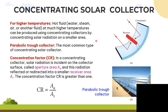Next, we look at concentrating solar collectors. Here you can see an example of a parabolic trough collector, with the concentrator and the receiver shown. For higher temperatures, hot fluid — for example water, steam, air, or another fluid — at much higher temperatures can be produced using concentrating solar collectors by concentrating solar radiation on a smaller area. The parabolic trough collector is the most common type of concentrating solar collector.